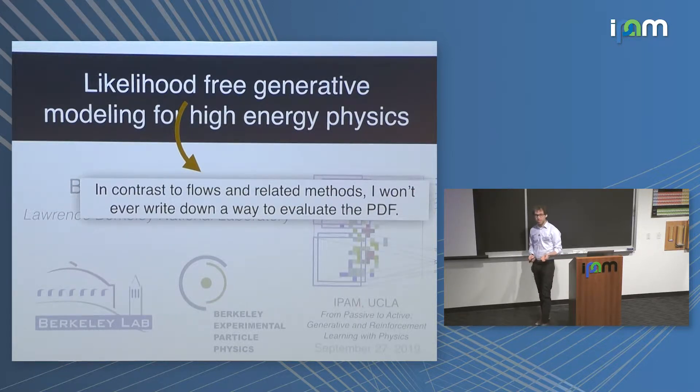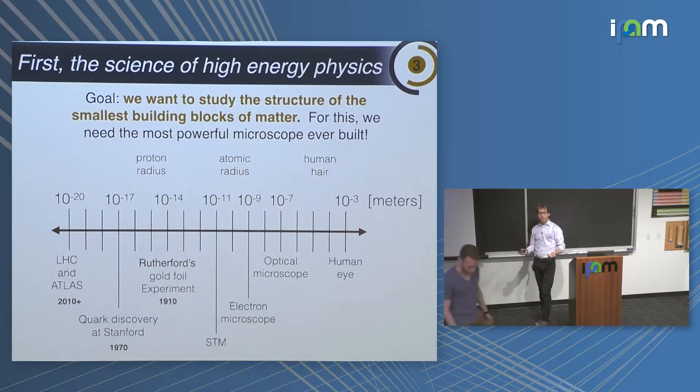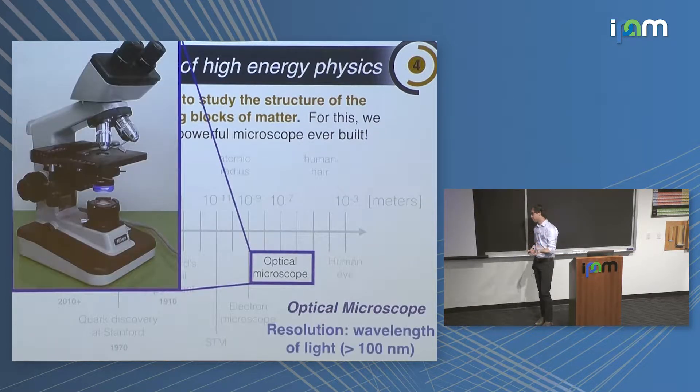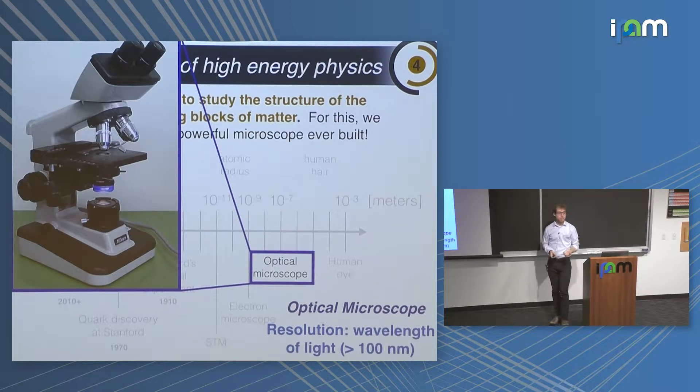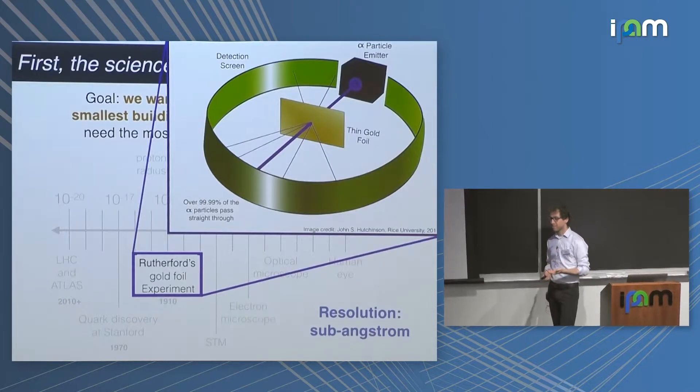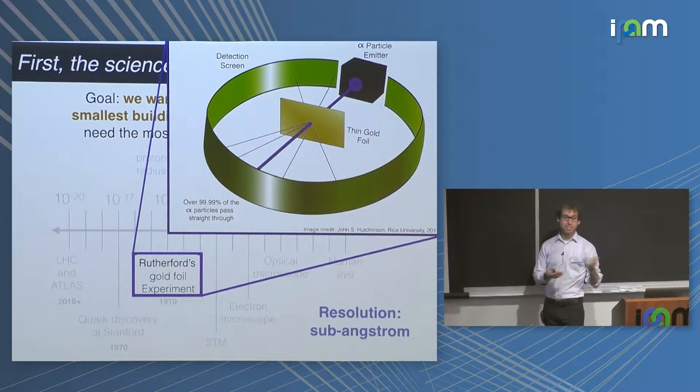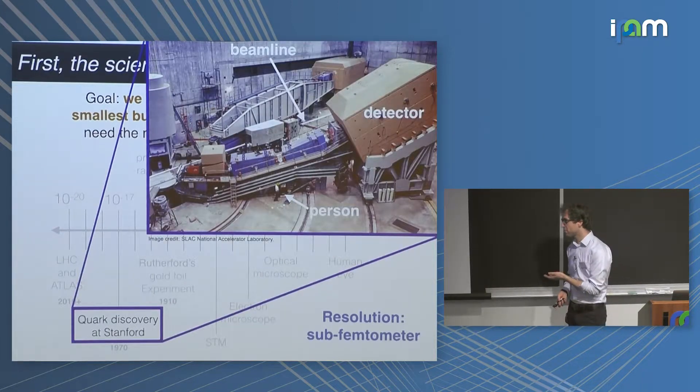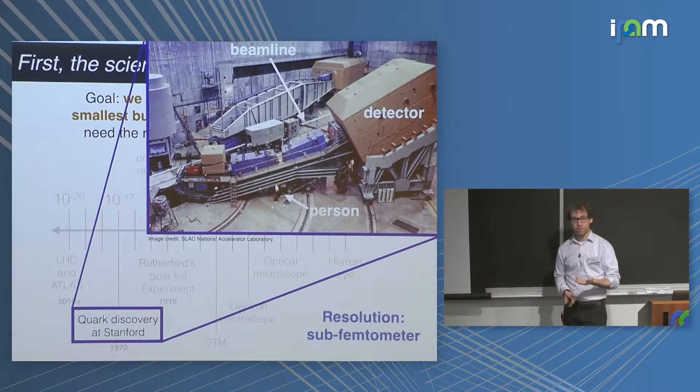But like everyone else, to begin, I need to tell you a little about the science. So I'm a high-energy physicist. Our goal is to identify the smallest length-scale structures in the universe, and to do so we need to build a giant microscope. The energy of the probe particle sets the length scale that can be observed. Arguably the first high-energy physics experiment was at the turn of the last century, with the discovery of atomic structure.